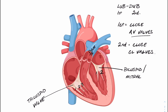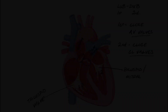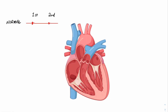The semilunar valves sit at the base of the great vessels. At the base of the pulmonary trunk we find the pulmonary valve, and at the base of the aorta we find the aortic valve. The lub and the dub should be nice and clear, distinct sounds, and we shouldn't hear too much more in between the first and the second heart sound. These normal heart sounds can be represented on a cardiogram, which is just a representation of the sound waves when listening to the heart.